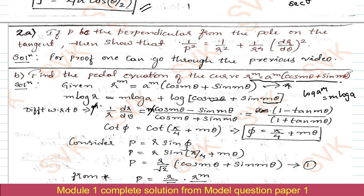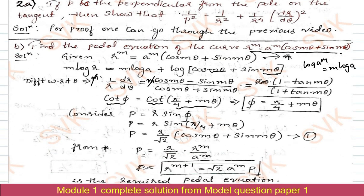The left-hand side (1/r)·(dr/dθ) = cot φ. On the right-hand side, dividing numerator and denominator by cosmθ gives (1 − tanmθ)/(1 + tanmθ). By the standard trigonometric identity, this equals cot(π/4 + mθ). Since cot φ = cot(π/4 + mθ), taking cot⁻¹ of both sides gives φ = π/4 + mθ.